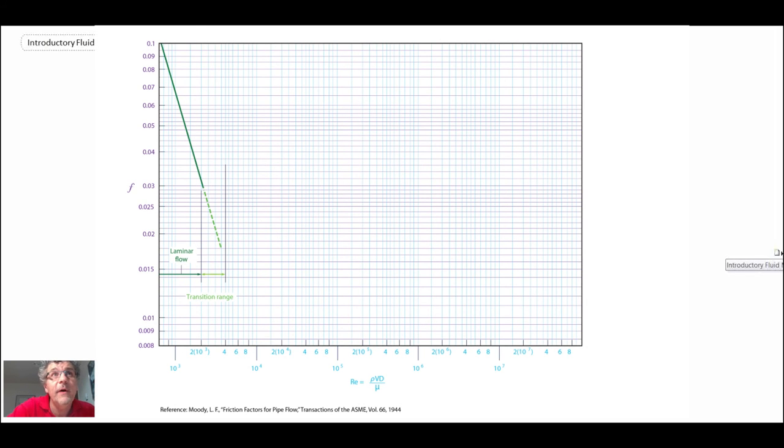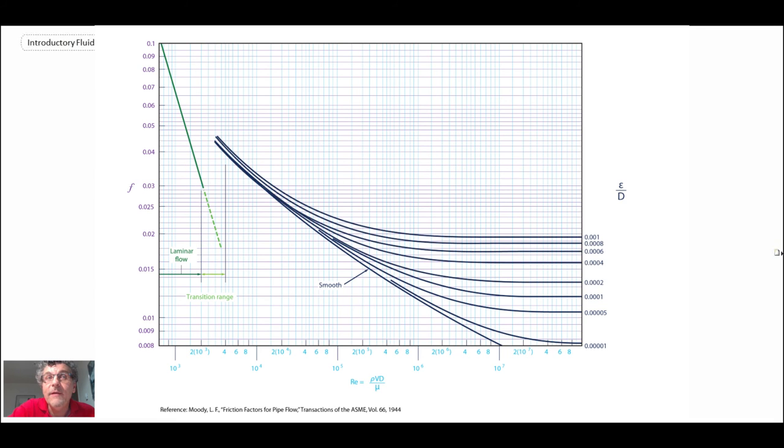What we have here is Moody diagram with a laminar flow curve on it. And then we have smooth pipe curve. You can see it there. And then we start putting curves with variable epsilon over d. So surface roughness and we have the smallest surface roughnesses. And then we have it increasing.